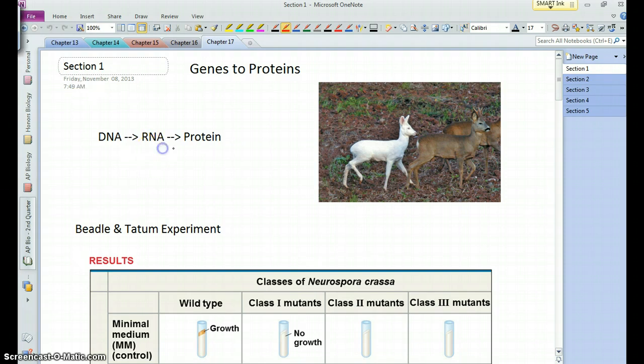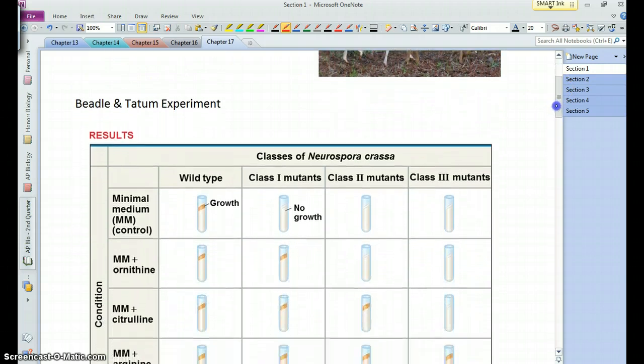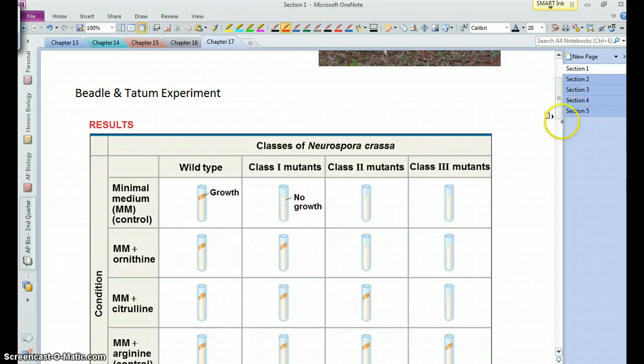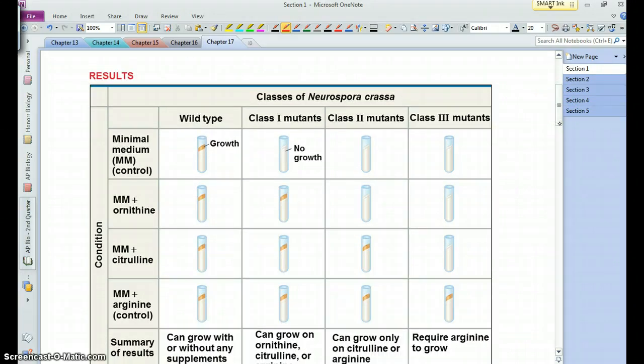Now here's an experiment we've covered - the Beadle-Tatum experiment. This is one in which they demonstrated that centrally particular genes are responsible for particular proteins or particular enzymes.